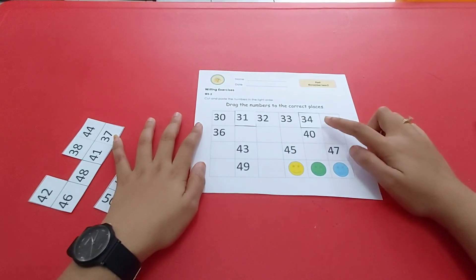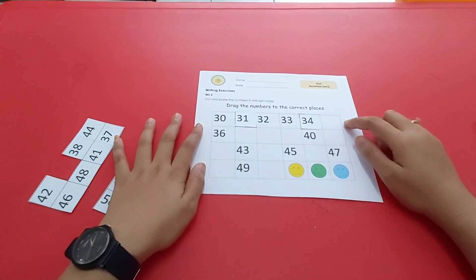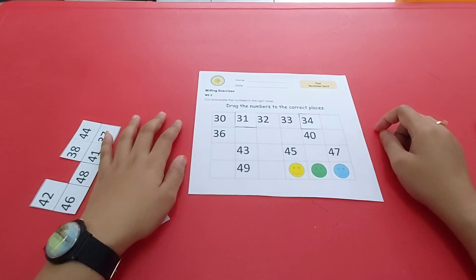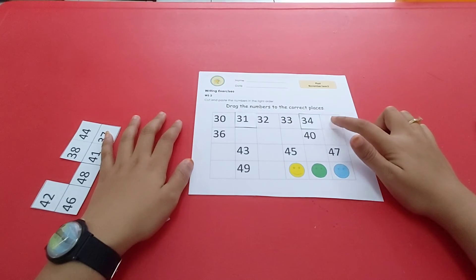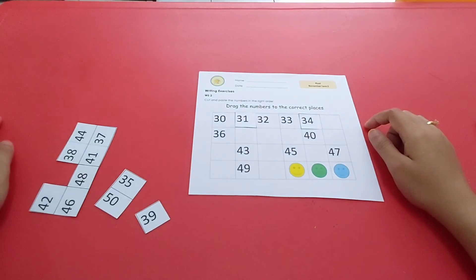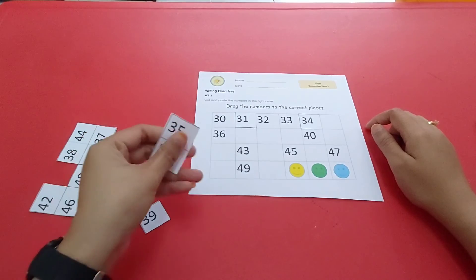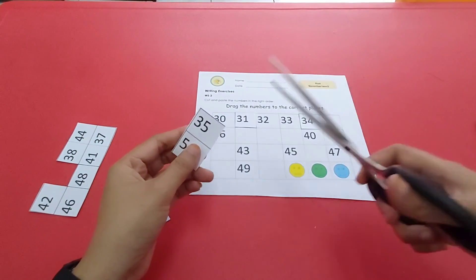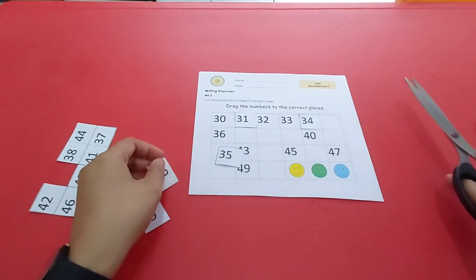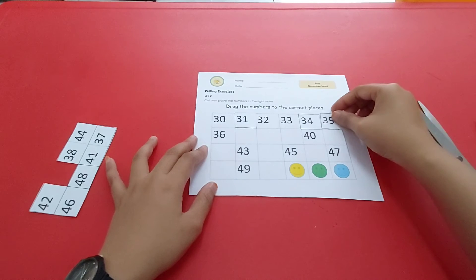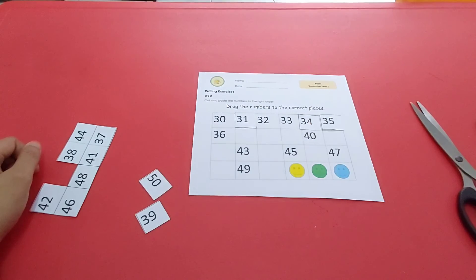Lalu, angka berapa ya setelah 34? Angka berapa yang harus kita tempelkan di sini? Ya, yang harus kita tempelkan di sini adalah angka 35. Ini adalah angka 35. Mari kita gunting dan tempelkan di tempat yang seharusnya. Seperti itu.